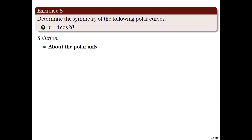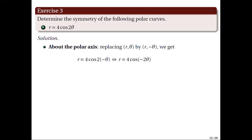Testing symmetry about the polar axis by applying the following replacement, we get r equal to 4 cosine 2 negative theta, which is equivalent to r equal to 4 cosine of negative 2 theta. Since cosine is an even function, this is equivalent to r equal to 4 cosine 2 theta. Since this is exactly the original equation, the curve is symmetric about the polar axis.